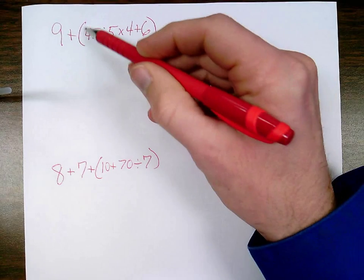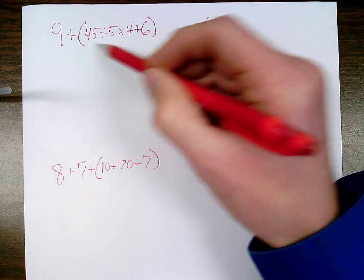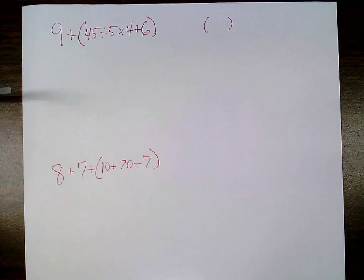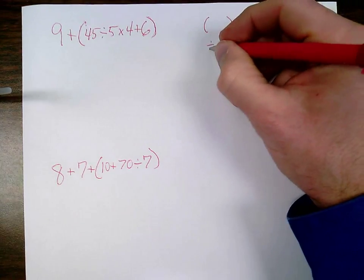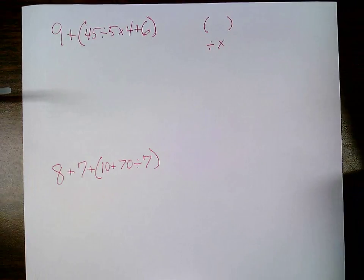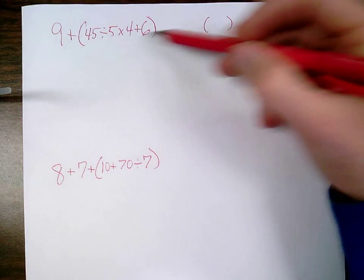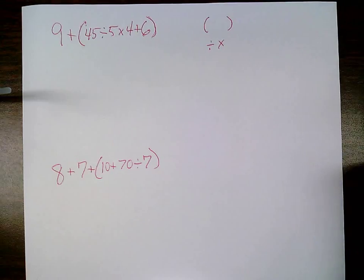Here's my parentheses and I need to do everything inside of there first. However, in there I still need to follow my order of operations. After parentheses, it is division and multiplication from left to right. So inside these parentheses I need to do the division and multiplication from left to right, and I want to do one step at a time.